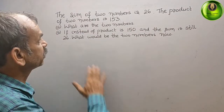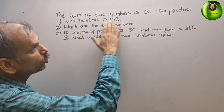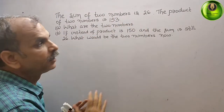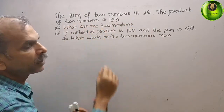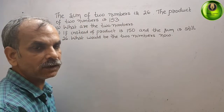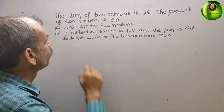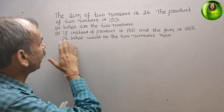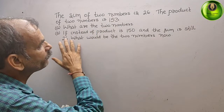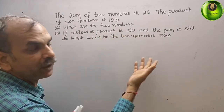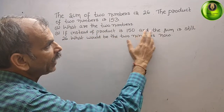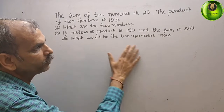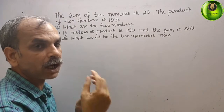The question is: the sum of the two numbers is 26 and the product of two numbers is 153. What are the two numbers? And if instead of 153 the product is 150 and the sum is still 26, what would be the two numbers now?